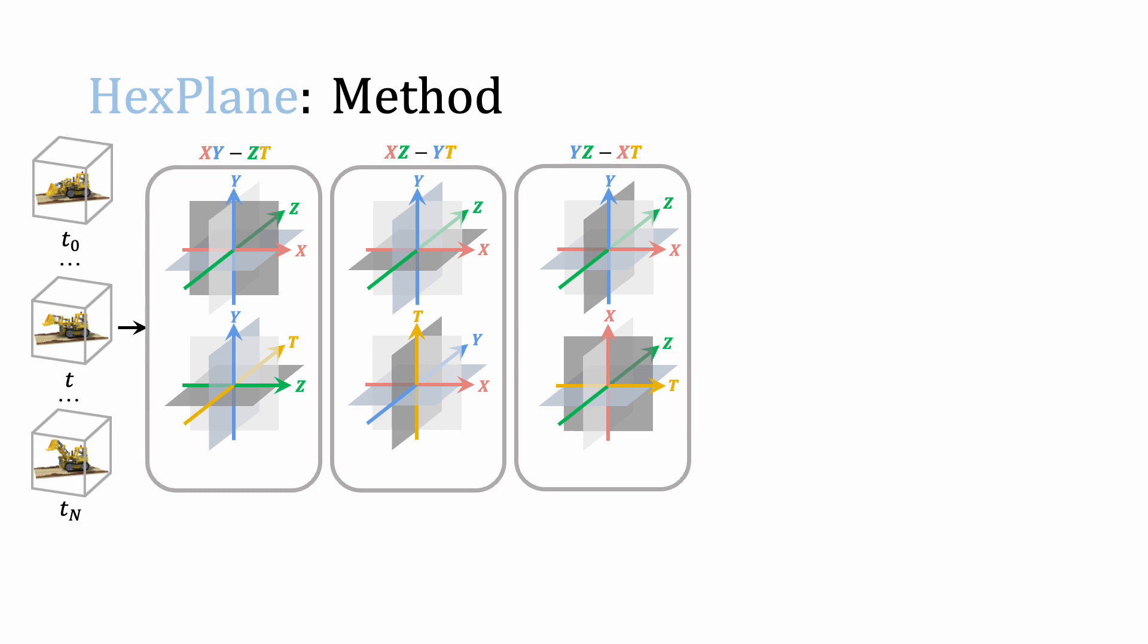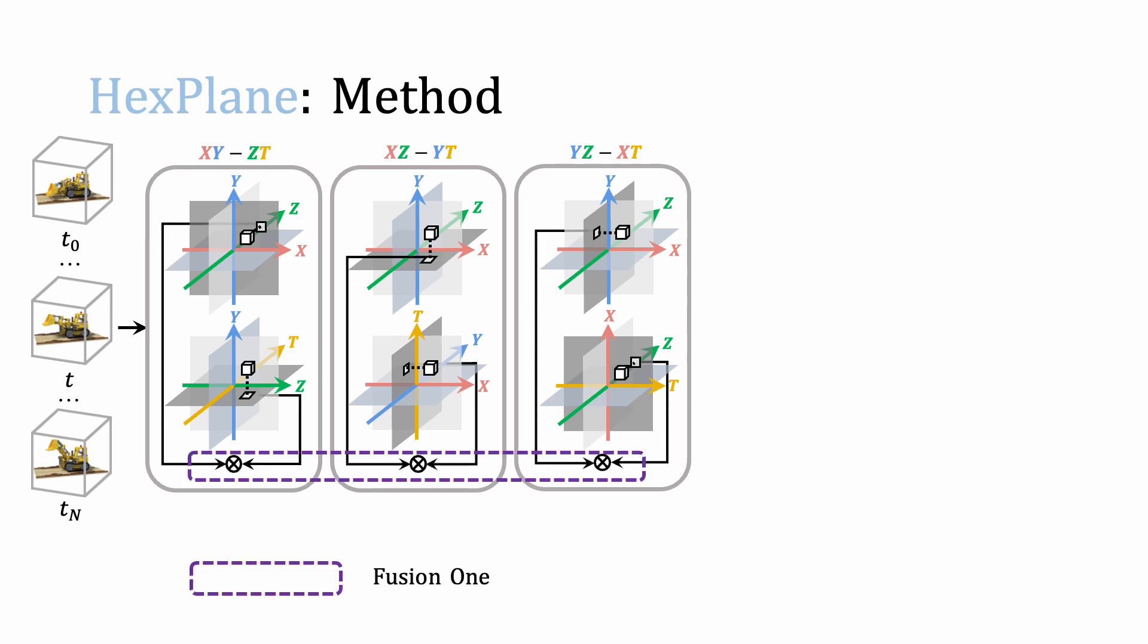It computes a feature vector for a 4D point in spacetime by projecting the point onto each feature plane, then aggregating the six retrieved feature vectors with two fusion steps. The first step fuses features within paired planes, and the second step fuses features between three pairs.